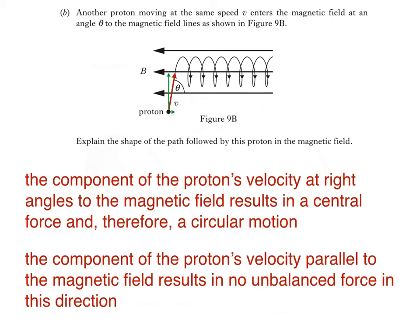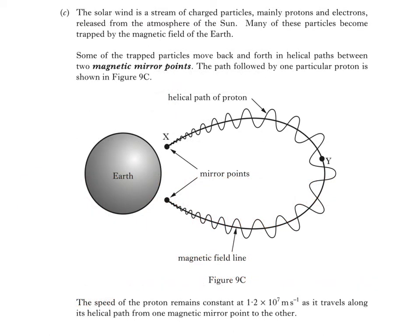The next part of the question is a bit more mathematical. Here's part C. The solar wind is a stream of charged particles, mainly protons and electrons, released from the atmosphere of the sun. Many of these particles become trapped by the magnetic field of the earth. Some of the trapped particles move back and forth in helical paths between two magnetic mirror points. The path followed by one particular proton is shown in figure 9C. The speed of the proton remains constant at 1.2 times 10 to the power of 7 meters per second as it travels along its helical path from one magnetic mirror point to the other.